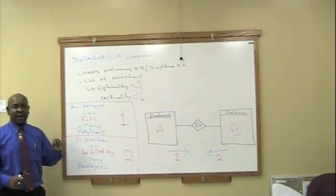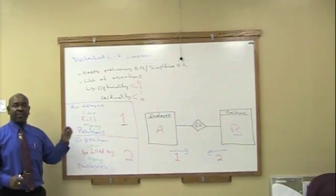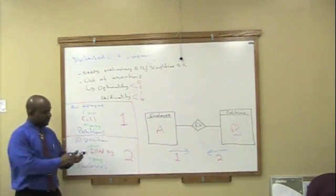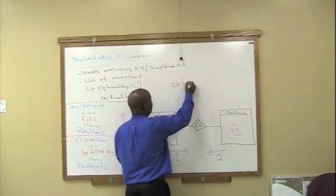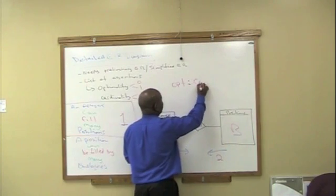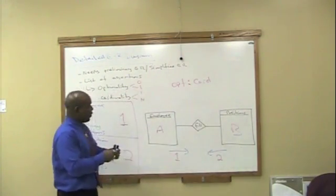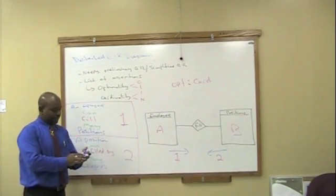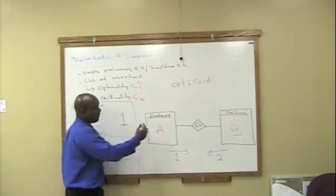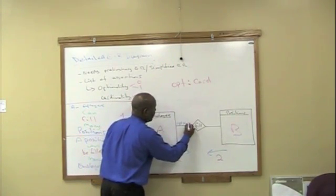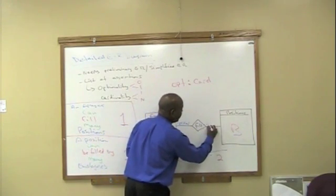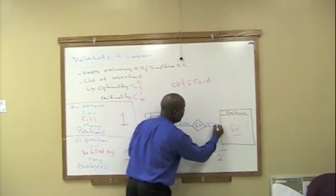The way that you put it on the diagram is very simple, and it's always done one way. Optionality, colon, cardinality. Therefore, on our diagram, we will have optionality, colon, cardinality, and optionality, colon, cardinality.